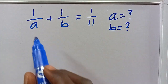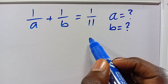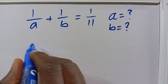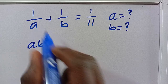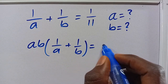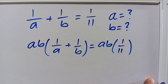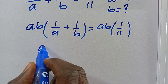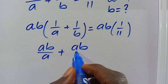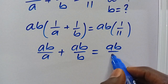What is the value of A and B given that 1 divided by A plus 1 divided by B equals 1 divided by 11? From here, let's multiply through by AB. So we have AB multiplied by 1/A plus 1/B equals AB multiplied by 1/11. This gives us AB/A plus AB/B equals AB/11.